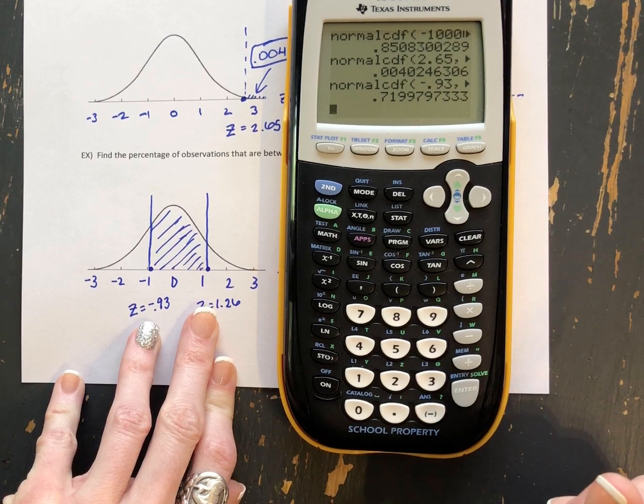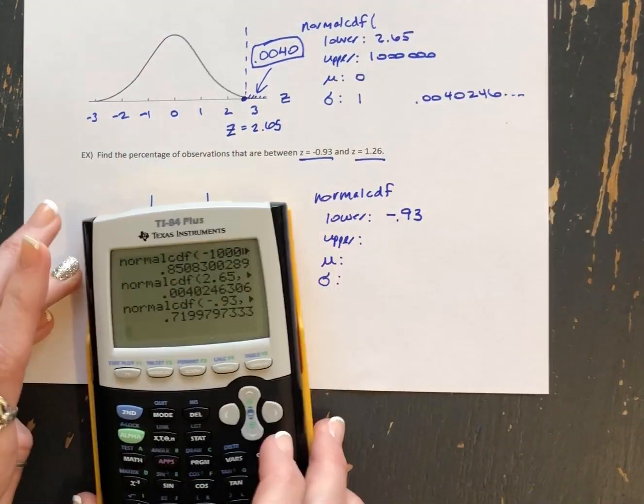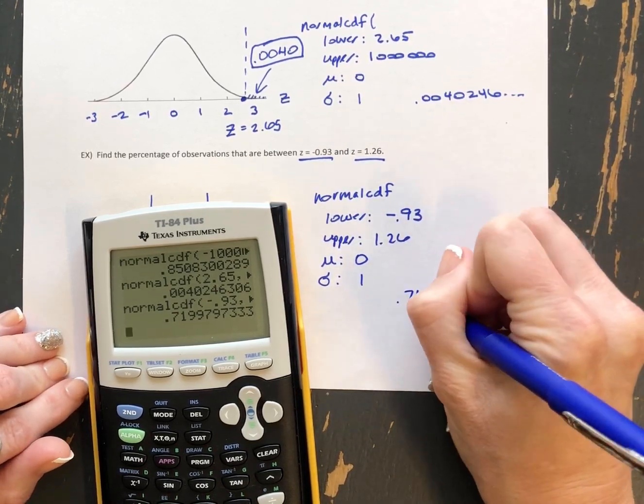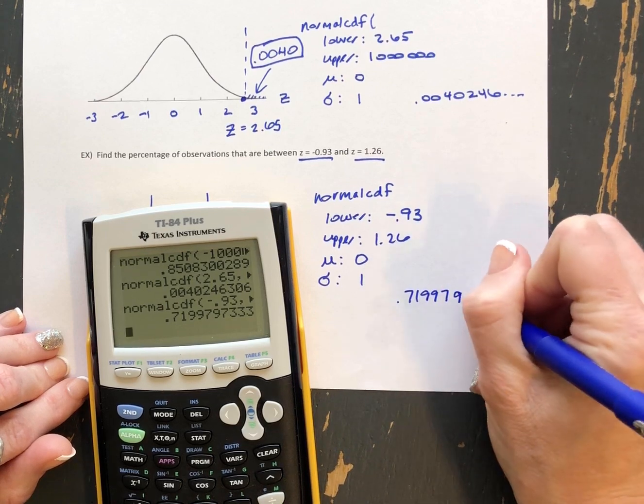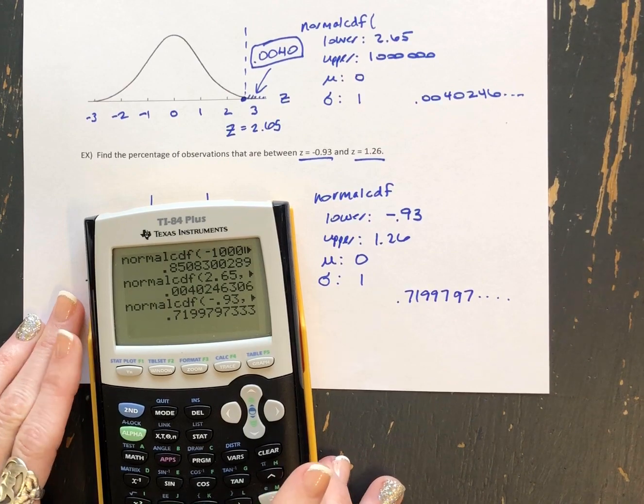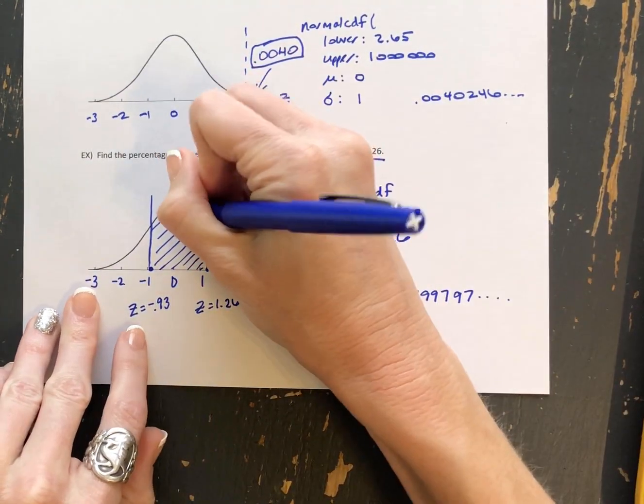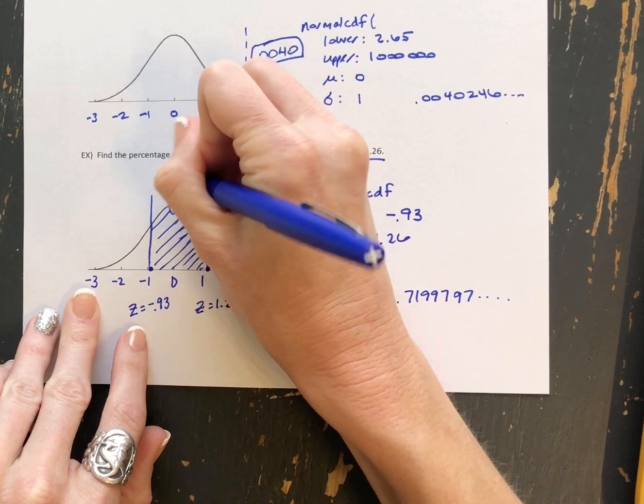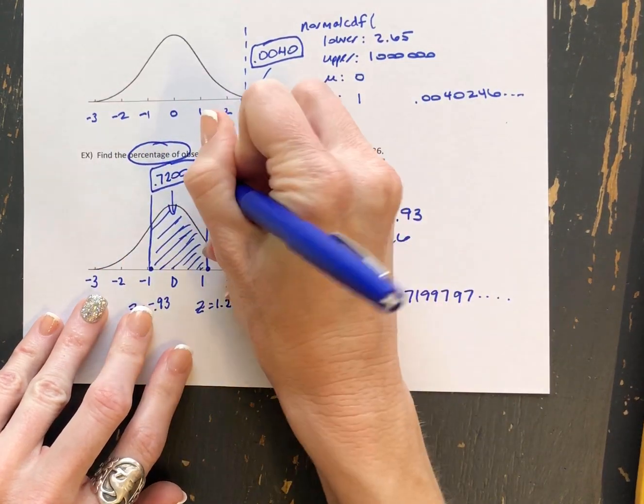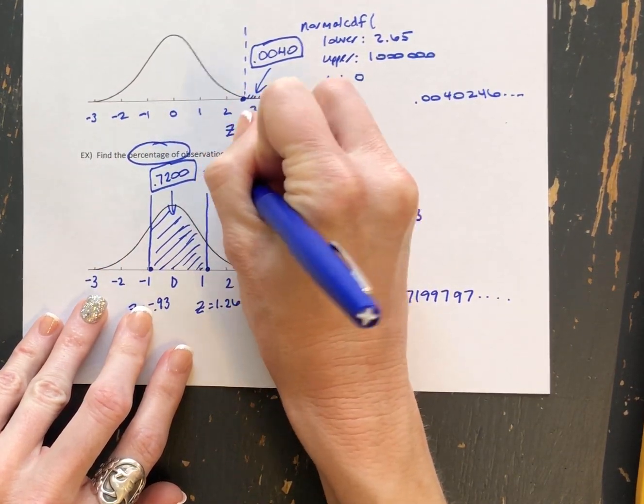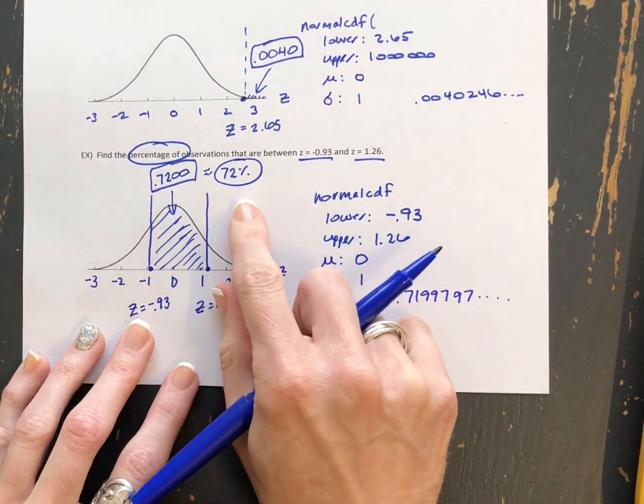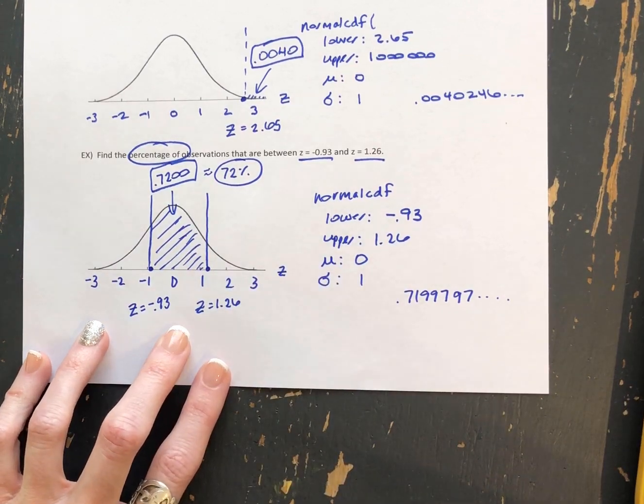And we get 0.7199797. So rounded to four decimal places, that's going to be 0.7200. This one did specifically ask us for a percentage. So we would want to change that and say about 72%. So we're just multiplying that decimal by 100 to get the percentage.